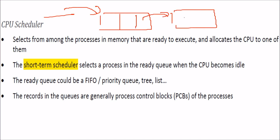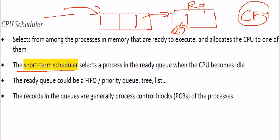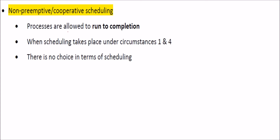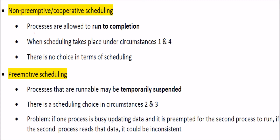The CPU scheduler works in stages. First, the long-term scheduler brings processes into memory. Once in memory, they are placed in the ready queue. The short-term scheduler then selects one process from the ready queue, and the dispatcher gives control of the CPU to that selected process. Processes in the ready queue are tracked using their PCBs (process control blocks), and selection can be done in first-in-first-out order.